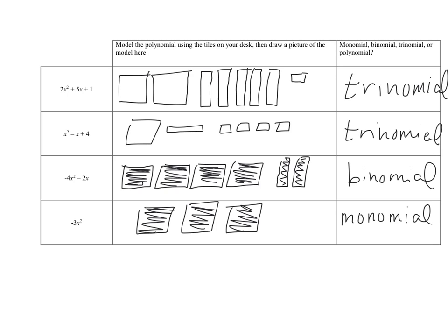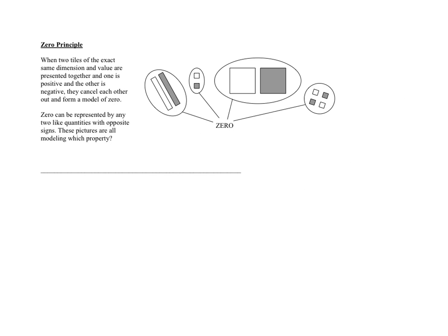Pause the video and read these 2 paragraphs to yourself. Yes, I actually want you to read them — don't skip this step. So basically, we can see that if I have a positive x and a negative x together, that's going to make 0, because positive x plus negative x is 0. Same thing with any of the other shapes: a positive x squared and a negative x squared together make 0, and a negative 1 and a positive 1 make 0. So what property do you think this is illustrating? Yes, it is the additive inverse property.